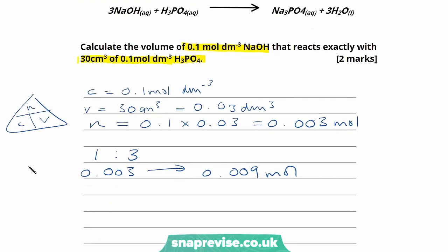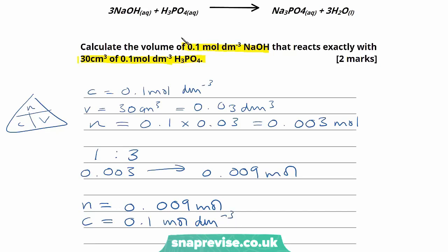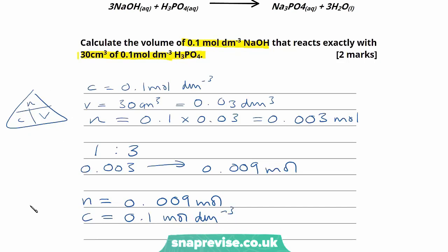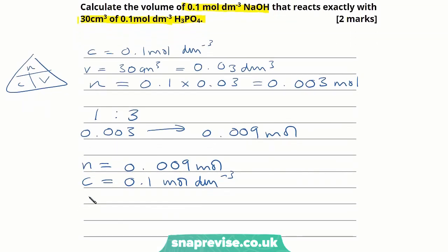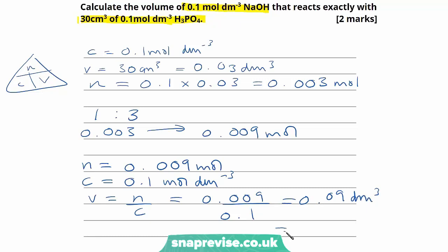The number of moles of sodium hydroxide is 0.009 moles, and we're told the concentration is 0.1 mol/dm³. We want to work out the volume. From our pyramid, volume equals number of moles divided by concentration: 0.009 divided by 0.1 gives 0.09 dm³, which is equal to 90 centimetres cubed.